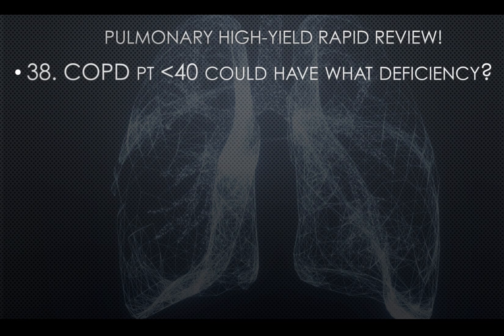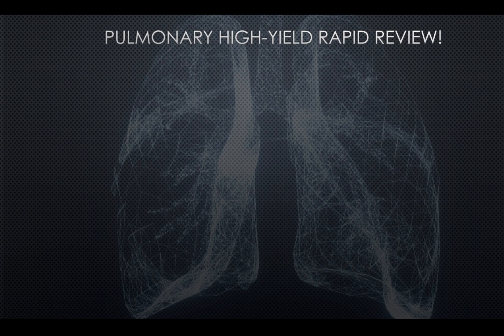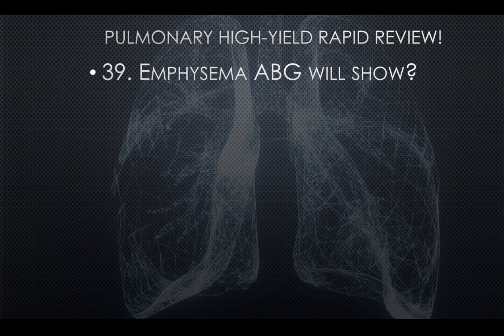Question thirty-eight: COPD patients under age 40 could have what deficiency? A 35-year-old with breathing problems, wheezing, flat diaphragms on chest x-ray, and barrel chest suggests COPD, but if under 40, they likely have alpha-1 antitrypsin deficiency. Question thirty-nine: Emphysema ABG will show respiratory alkalosis.